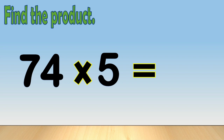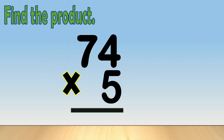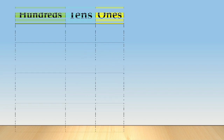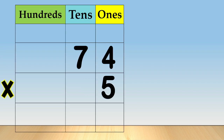Another example — find the product: seventy-four times five. First, arrange the numbers in columns like this. Place each digit in a column based on its place value. Next, multiply the digit in the ones place with the multiplier, five.